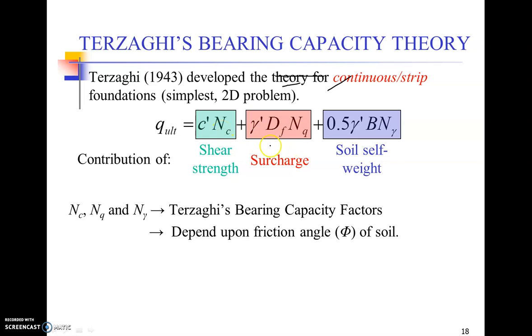The second term is the surcharge term. That is simply gamma times Df is the overburden and Nq is a factor again depending upon the phi value of the soil. The last term is the self weight of the soil under the foundation or where the foundation is being placed.